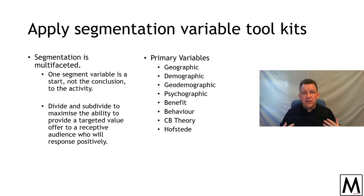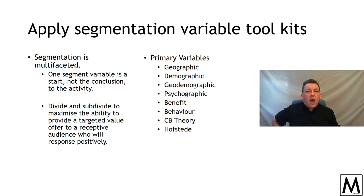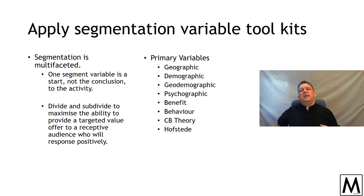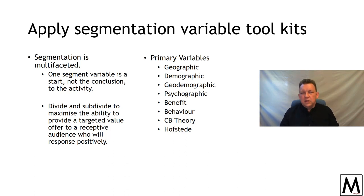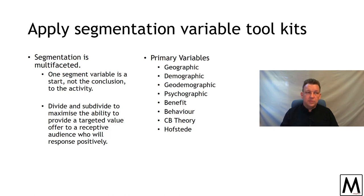But geography on its own doesn't tell you anything about the people who were there. Demography is the objective criteria around things like income, living standards, age, gender, and education levels. The challenge is that demography is more observable but less predictive. Things like the Australian Bureau of Statistics have geodemographics for you. Psychographic profiling is when you start getting into people's attitudes and beliefs — it requires more survey work, requires people to self-identify, requires a lot of understanding and work, but it's got potency.